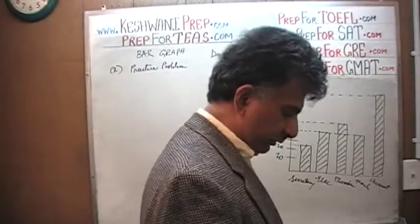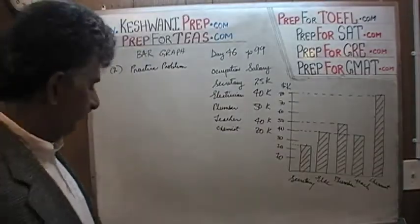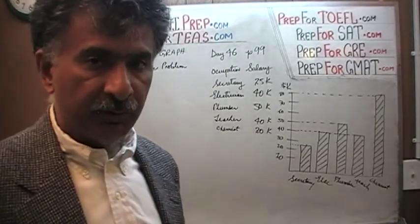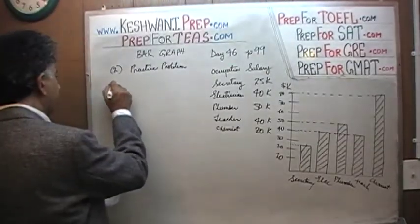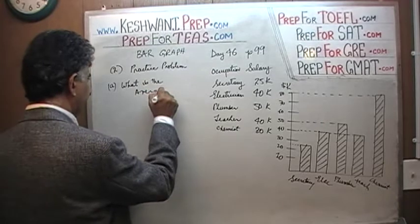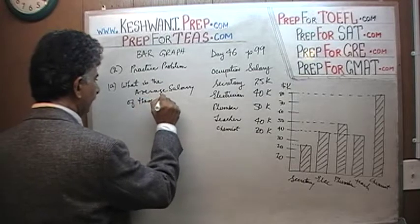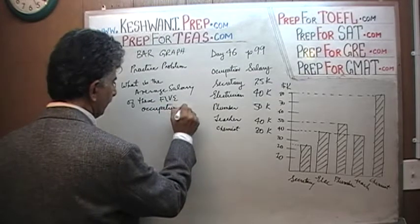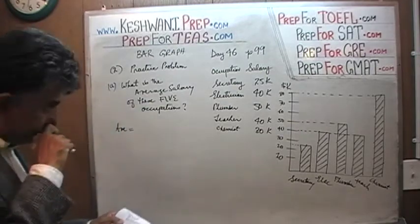So that is what is given to us, and our job is to draw three conclusions. Here is the first question. The three questions we are going to pose — the answers to those three questions will be our three conclusions. Part A: what is the average salary of these five occupations? Pretty straightforward. We know how to find the average — average is the sum of all of these things.